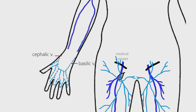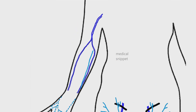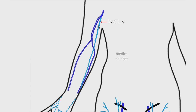The basilic vein ascends along the medial aspect of the forearm. In the middle of the arm, the basilic vein pierces the deep fascia. At the lower border of the teres major muscle, the basilic vein joins with the brachial vein to form the axillary vein.